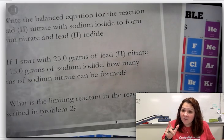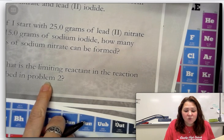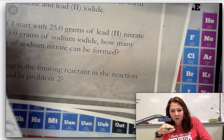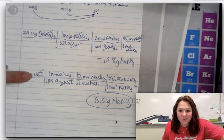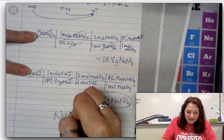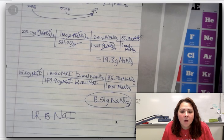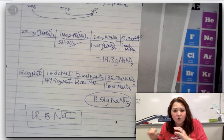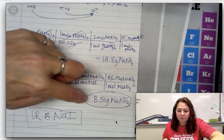The second question asks: what is the limiting reactant in that reaction? When it says what is the limiting reactant, your answer is a reactant. The reactant that runs out first is your limiting reactant. My two answer possibilities are either sodium iodide or lead(II) nitrate. The one that runs out first is NaI — the limiting reactant is NaI. You still have to do the math to get that answer, but we run out of sodium iodide first because it only makes 8.51 grams.